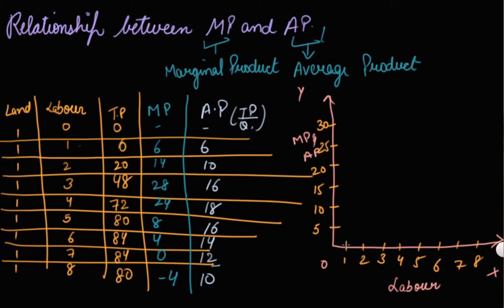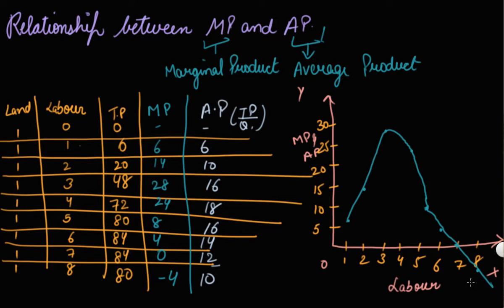Let's first plot marginal product. At unit 1, marginal product is 6. At unit 2 it is 14. At unit 3 it is 28. At unit 4 it is 24. At unit 5 it is 8. At unit 6 it is 4. At unit 7 it is 0. At unit 8 it is minus 4. So let's plot MP on the graph.